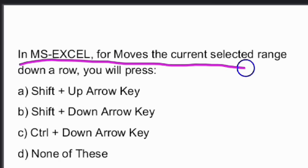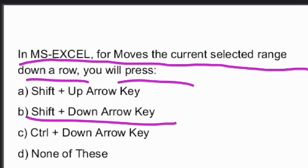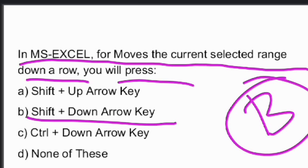Next question: in MS Excel, what moves the current selected range down a row? You press Shift plus the down arrow key — option B is the right answer.